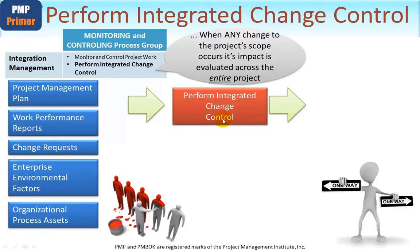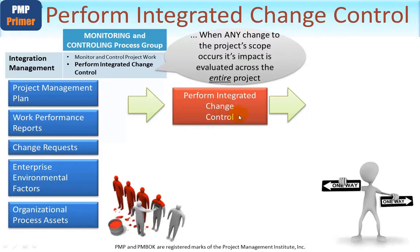Enterprise environmental factors are also an input. Going back to our example of a project on an oil rig — as part of analyzing true progress, you may have to send divers undersea to actually determine the impact of any suggested changes. So we need to take cognizance of these as part of the change control analytical process. Organizational process assets may provide templates, tools, guidelines, and procedures against which we must comply — think of the oil rig and the potential consequences of agreeing or not agreeing to any potential changes.